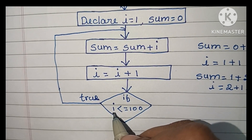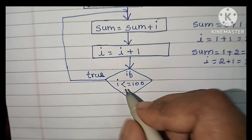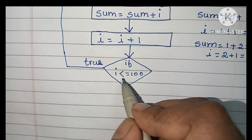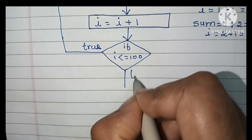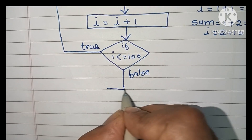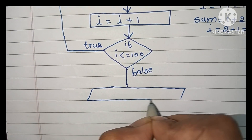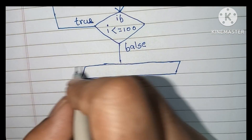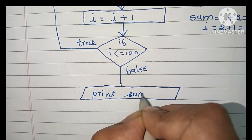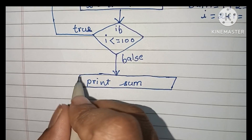The loop repeats until i > 100. When i = 101, checking 101 ≤ 100 is false, so we exit the loop. When the condition is false, we print the output value — the sum of the first hundred natural numbers. The output is written within a parallelogram shape.